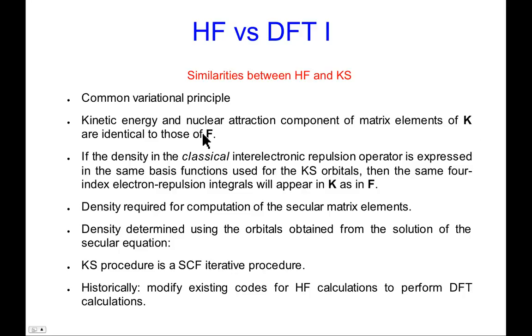And this really led to implementation being relatively straightforward in existing quantum chemistry codes to put DFT in. You were really calculating many of the same integrals. So if the density in the classical inter-electronic repulsion operator is expressed in the same basis functions used for the KS orbitals, then you would get four index integrals in K as well as in F.